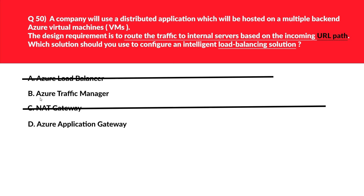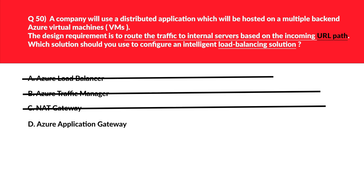Option B is Azure Traffic Manager, a DNS-based load balancing solution that can help route traffic to Azure virtual machines as well as external networks. However, there is no mention of DNS-based load balancing in the question, so this is also an incorrect choice. We are left with option D, Azure Application Gateway. We know that it works on layer 7 of the OSI model, which perfectly fits the question. We'll log D as the correct answer.